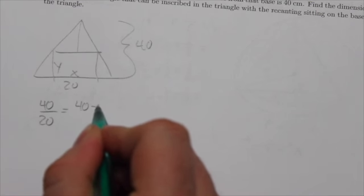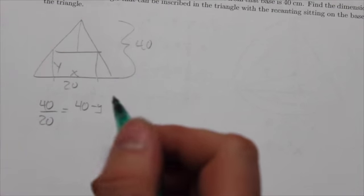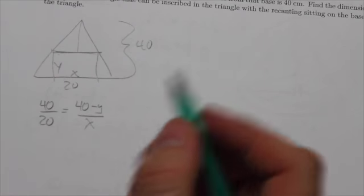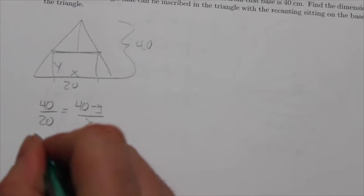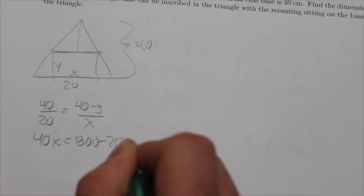which will be 40 minus y based on how I've drawn that. So the whole length minus the height of the rectangle over the base of the rectangle, x. If I do a little bit of cross multiplication there, I'm going to get 40x is equal to 800 minus 20y.